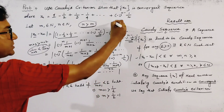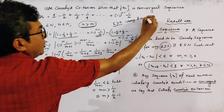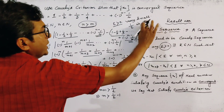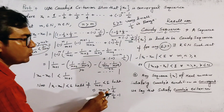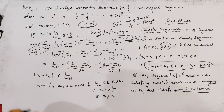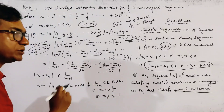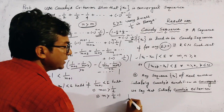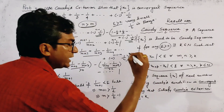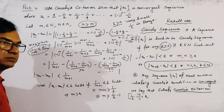Since epsilon is greater than zero but very small, 1/epsilon is a large positive number, and so 1/epsilon - 1 is also a positive number. To get a positive integer from this, we take k = floor(1/epsilon - 1), so that m > k.